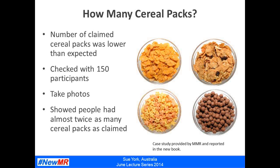In another example, researchers at MMR were surprised by the number of cereal packages respondents claimed to have stored at home — the number was much lower than expected. To check accuracy, they asked approximately 150 participants to take a photo of where they stored their cereal and send the picture via MMS to the agency. This showed that on average, people had almost twice as many packs of cereal as they had claimed based on recall. It also showed the proportion of own-label was much higher than people had claimed. This is a simple and great example of using mobile to enhance data quality.